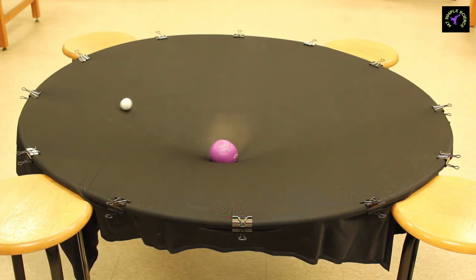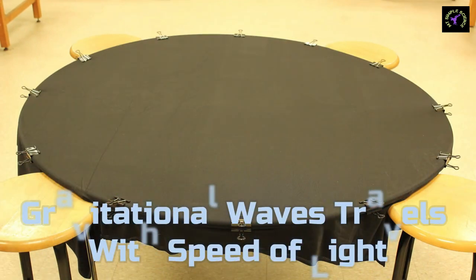All the planets are in motion like the object in the previous example. Even if there is no medium between Earth and Sun, the gravitational force of the Sun affects Earth because of the bending of space-time. This effect is not instantaneous but travels with the speed of light.